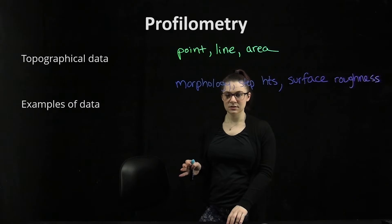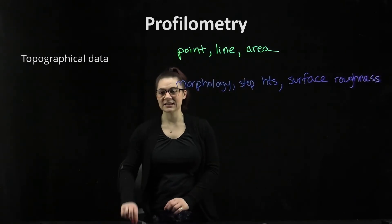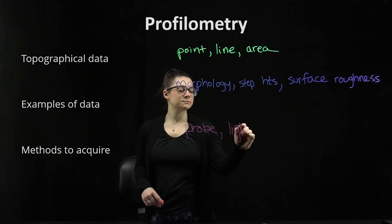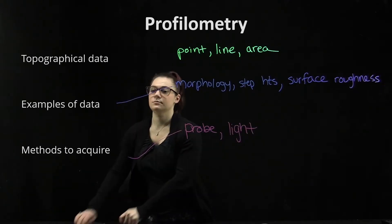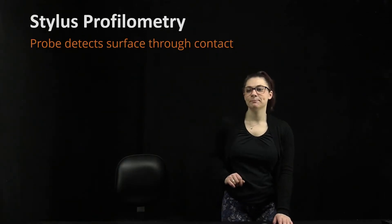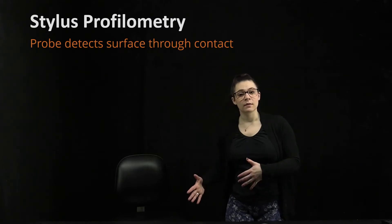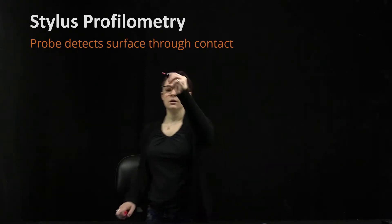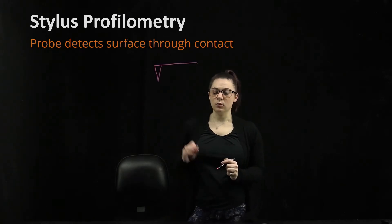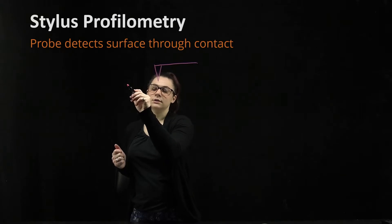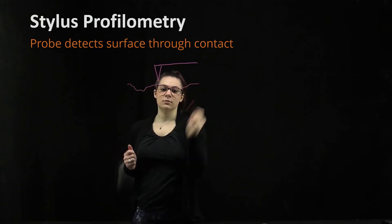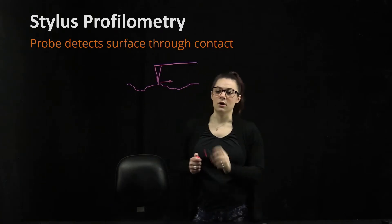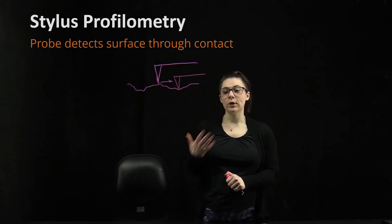There are a couple of different methods we can use to obtain this data. We could use a probe, or we could use light. First, we'll talk about stylus profilometry. In stylus profilometry, we have a probe that detects the surface through contact — it actually contacts the surface of our sample and moves along it. This is a point-by-point method.